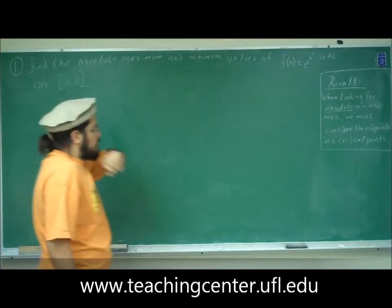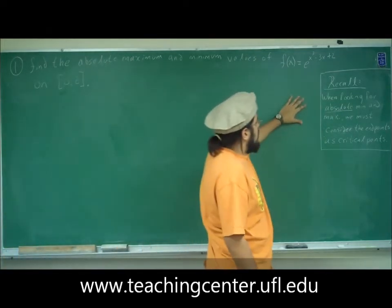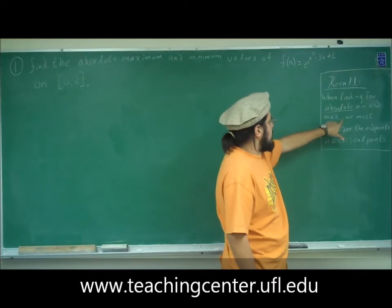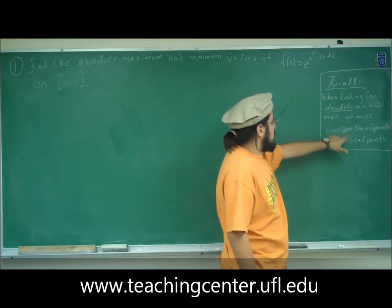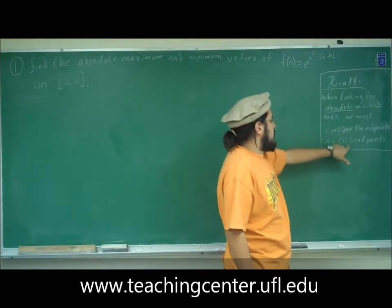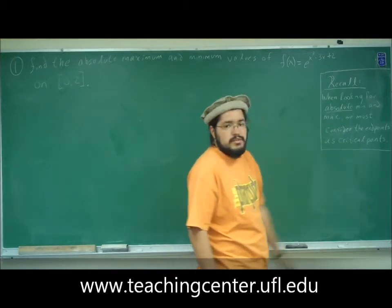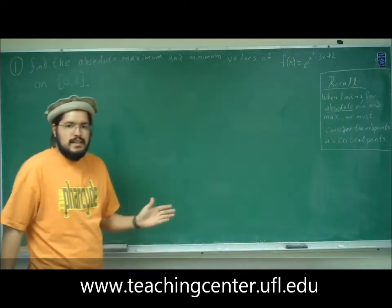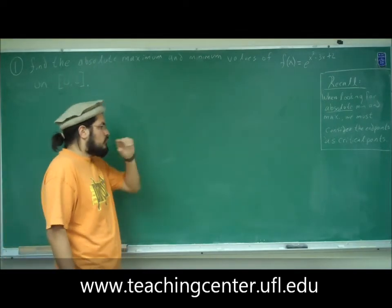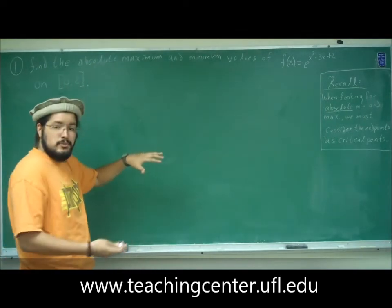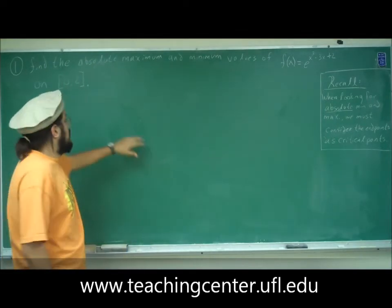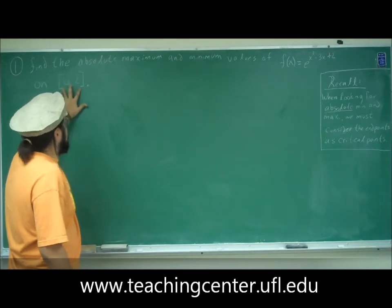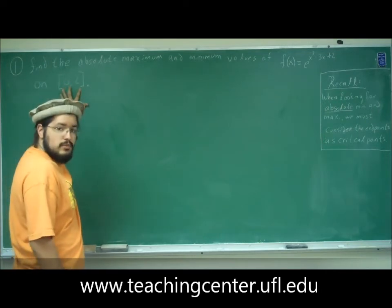I wrote something here to recall: when looking for the absolute min and max, we must consider the endpoints as critical points. So when we do our first derivative test and make it equal to 0 and find the possible critical points, we also must consider 0 and 2 as critical points.